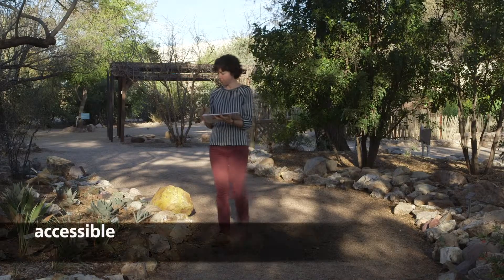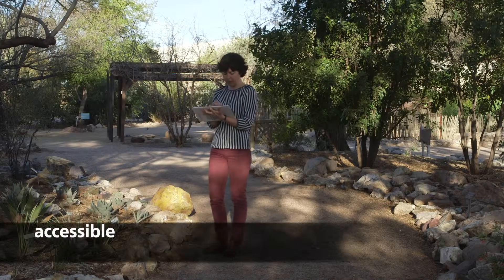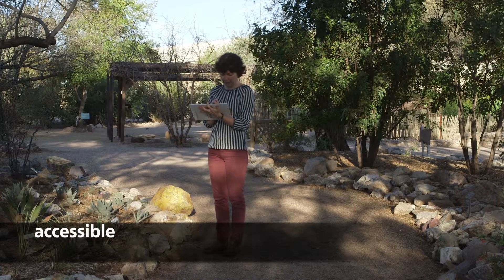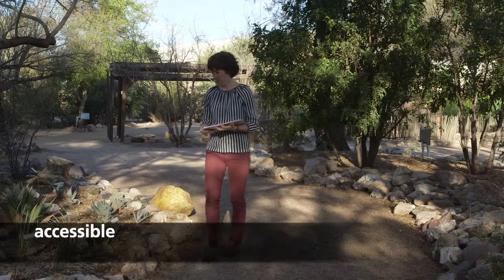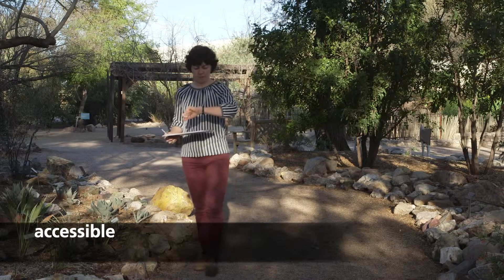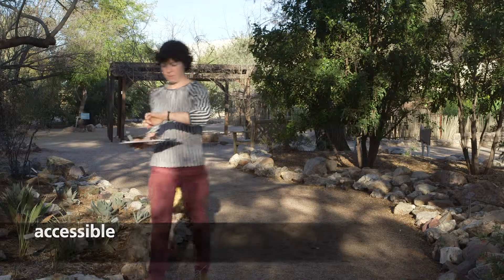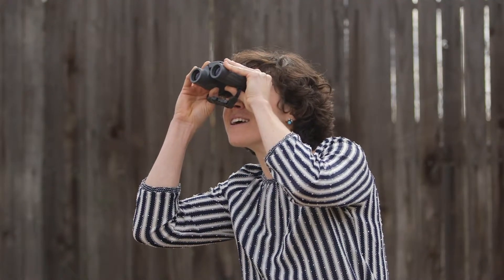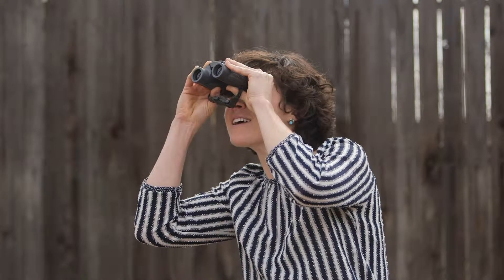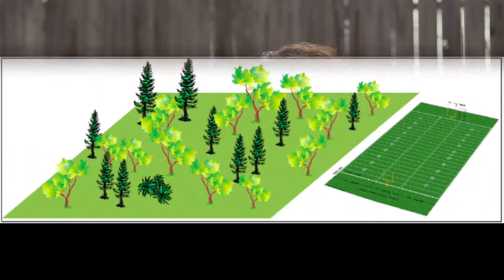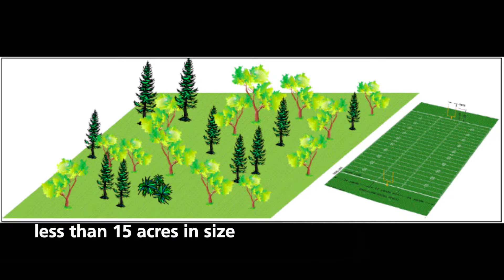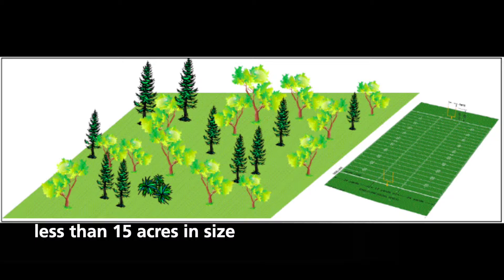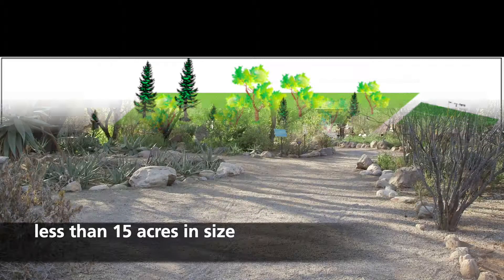Make sure your plants are accessible and take into account how long it will take you to walk between marked plants. Think about how you will search for animals and how much time you have set aside to observe each week. Your site should be no bigger than 15 acres, or the size of two football field lengths.